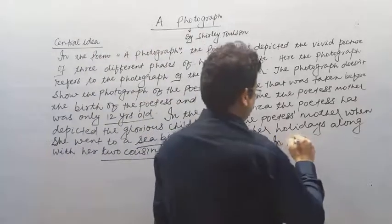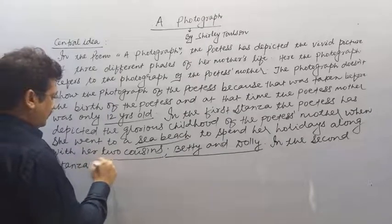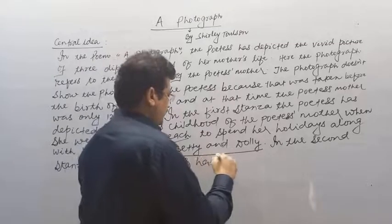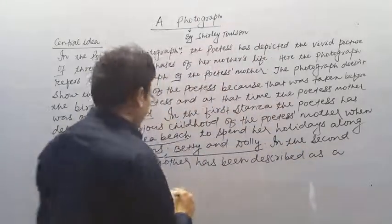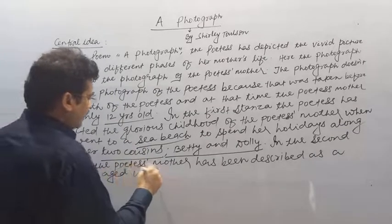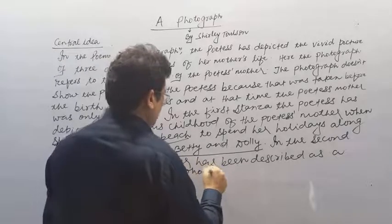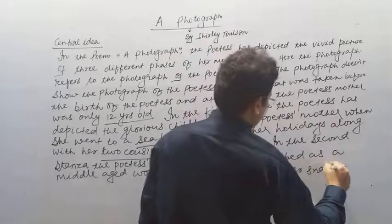In the second stanza, the poetess' mother has been described as a middle-aged woman — एक प्रौढ़ महिला, middle-aged woman के रूप में। Who laughs to see her own snapshot — जो अपने ही photograph को देखकर हँसती है।